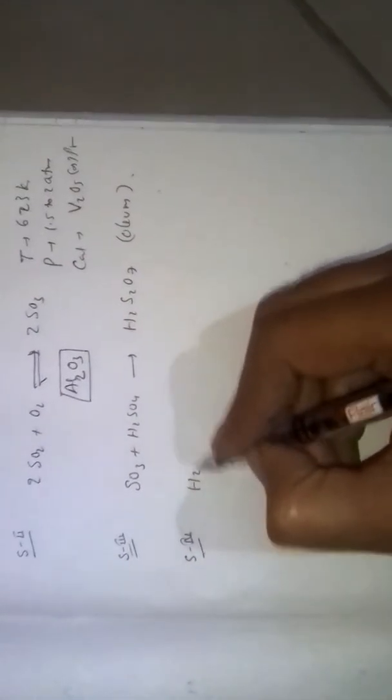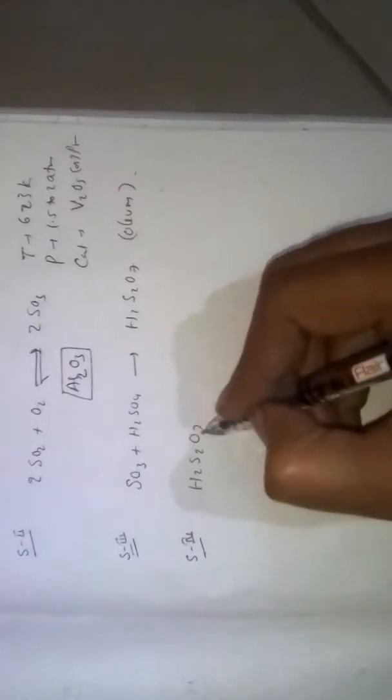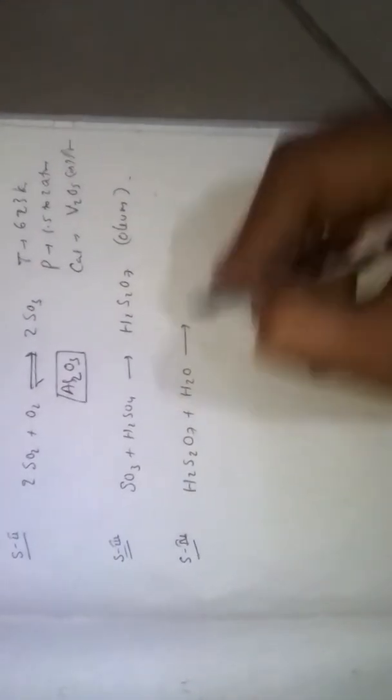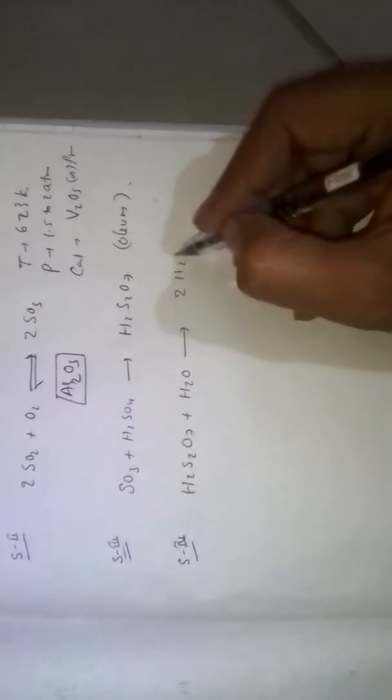Last step, step 4: H2S2O7 on hydrolysis, or dissolved in water, gives 2H2SO4. Sulphuric acid is formed.